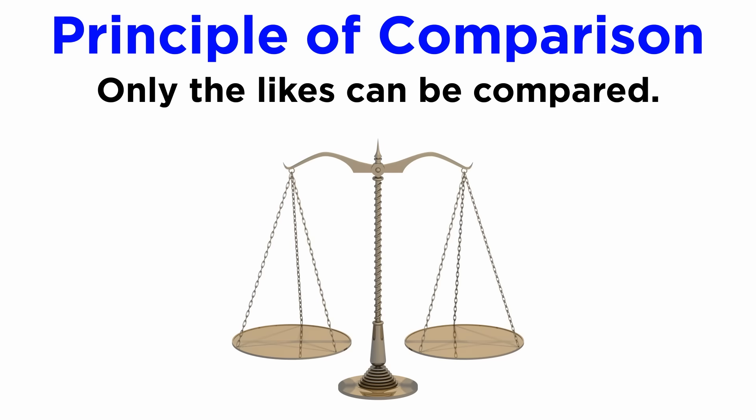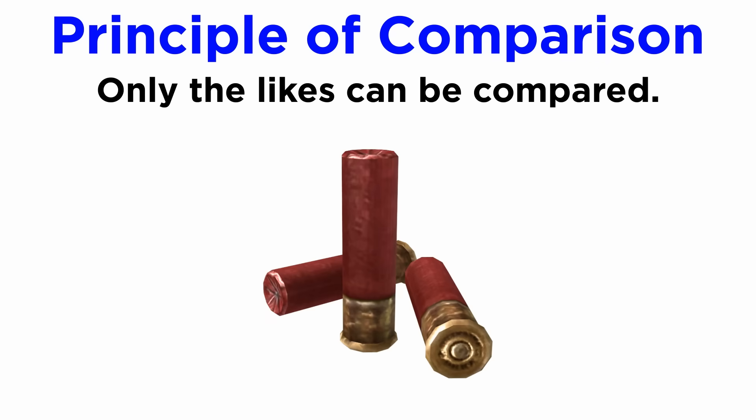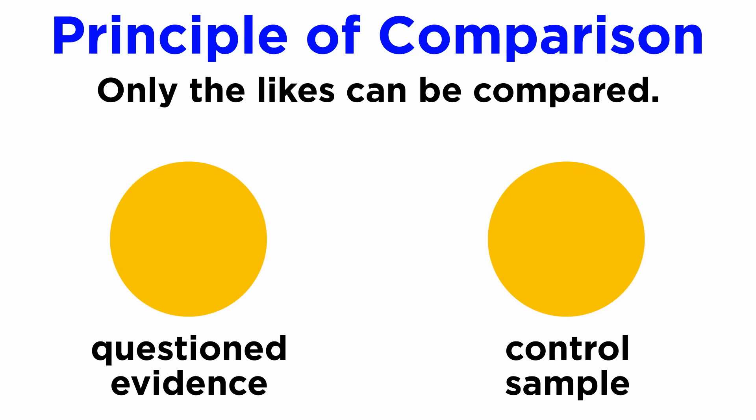The fifth principle is the principle of comparison. It states that only likes can be compared. If hair found on the crime scene is of a particular ethnic origin, it is meaningless to collect standard specimens from a totally unrelated type of person. If wads from a shotgun are found, there is no reason to use a high-velocity firearm for comparison. Control samples and specimens used for comparison should always be similar to the questioned evidence recovered from the crime scene.